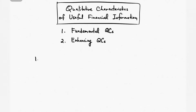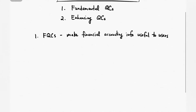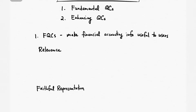I will first talk about the fundamental qualitative characteristics. This is what makes financial accounting information useful to users. For the fundamental qualitative characteristics, we have two: number one is relevance, and number two, we have faithful representation.